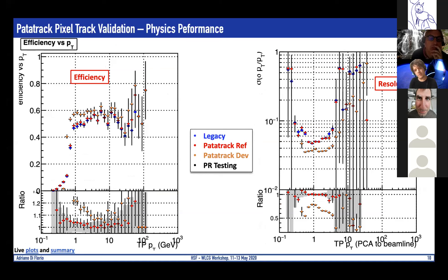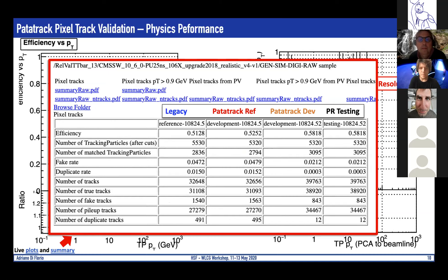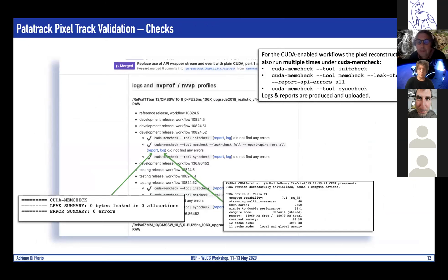For the reference we mean the one still run on the legacy branch, and the pull request under test. In this case you don't see any difference from the Patatrack reference because it was a technical pull request. These are the metrics we use, and of course tables are also automatically produced where you can compare digit by digit the differences between versions.